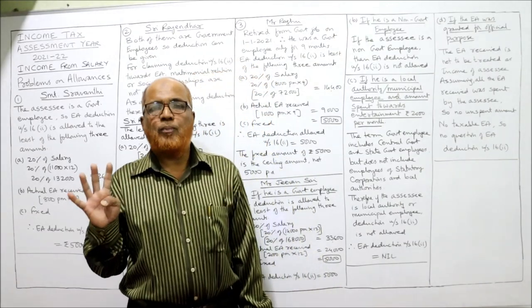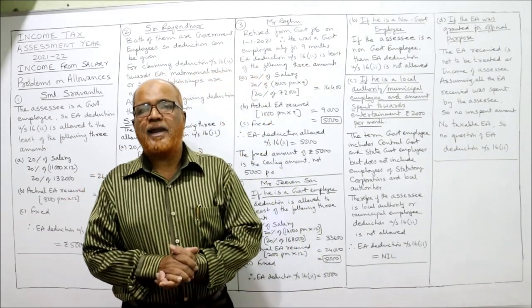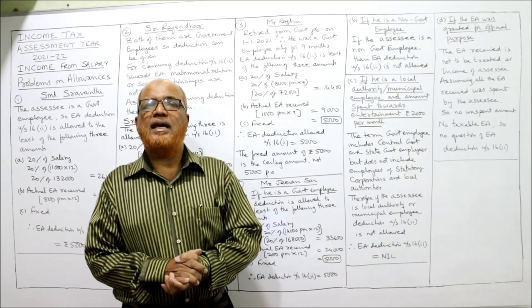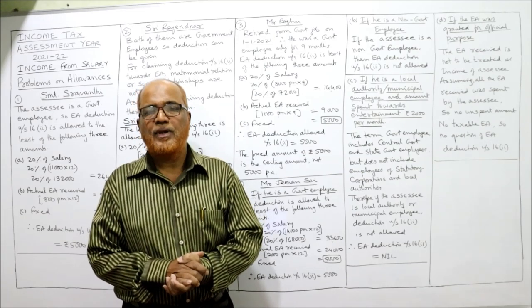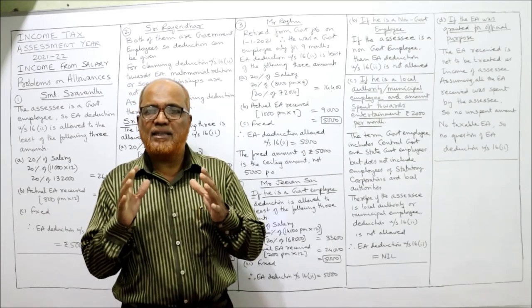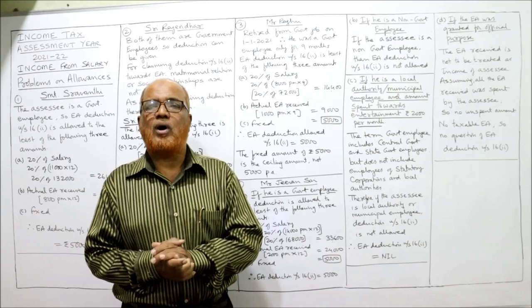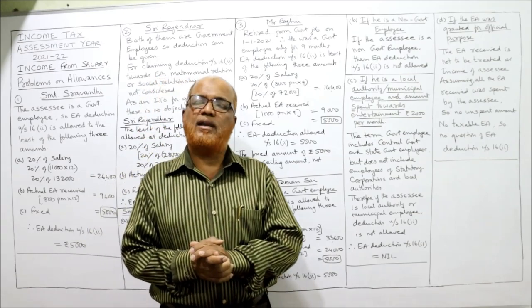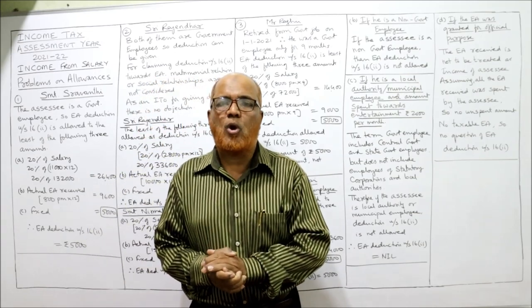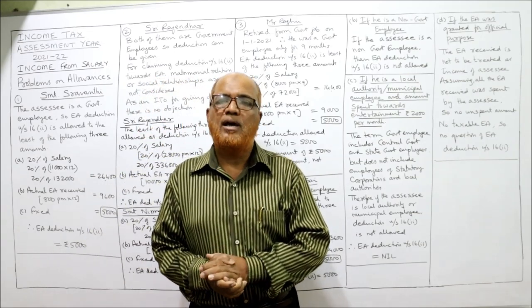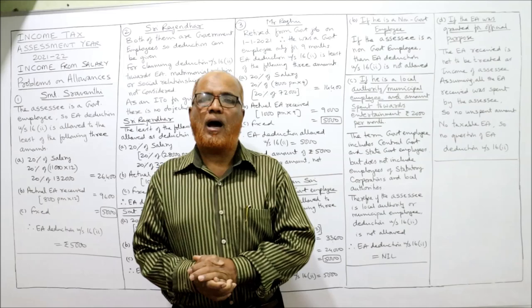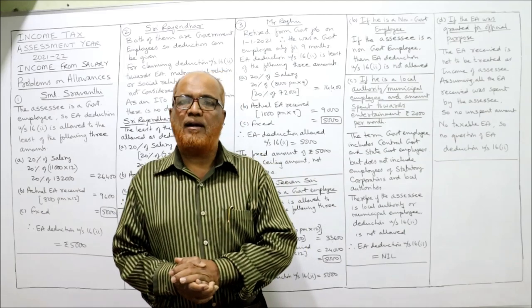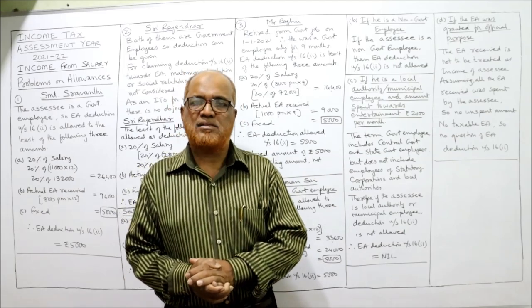I have explained four problems on EA deduction under Section 16-2. In the next video I am going to explain problems on HRA — house rent allowance.